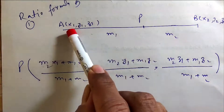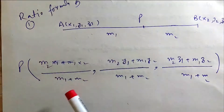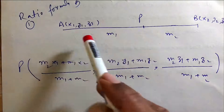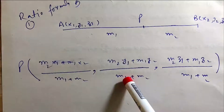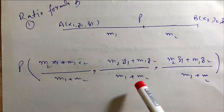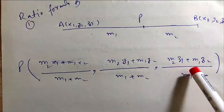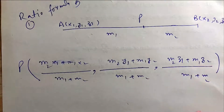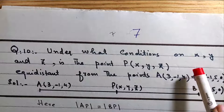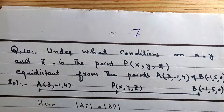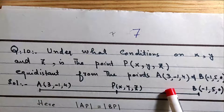M2·x1 plus M1·x2 over M1 plus M2. Similarly, M2·y1 plus M1·y2 over M1 plus M2, and M2·z1 plus M1·z2 over M1 plus M2. Now: under what conditions on x, y, and z is this point equidistant from the points A and B?